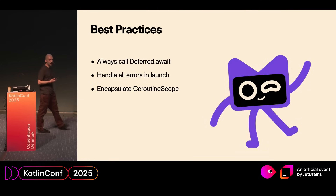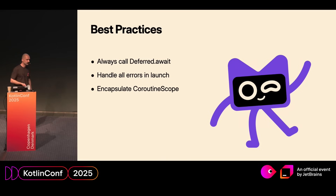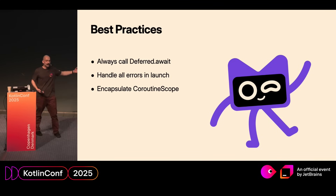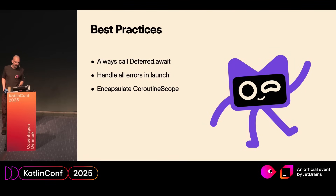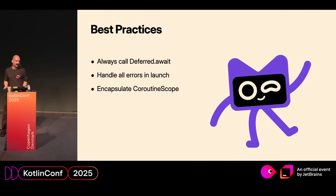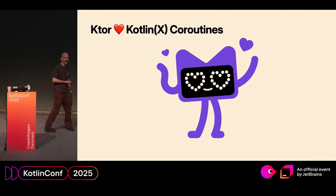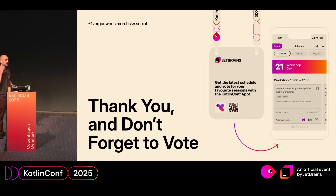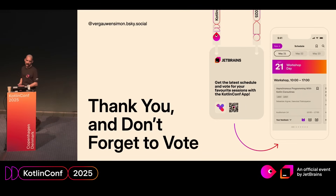To recap, what are some of the best practices of working with coroutines? Always handle all the errors in your launched coroutines and always await all the deferreds — if you do not await a deferred, any exception it contains will get swallowed. Always handle all your errors in launch, and prefer to encapsulate the coroutine scope, prefer composition over inheritance. I hope it's clear to everyone that Ktor loves Kotlin coroutines, and at least I love Ktor for it. Thank you all again for coming to my talk today. Please do not forget to vote. If you have any questions, I'll be happy to answer them here or later at the JetBrains booth.